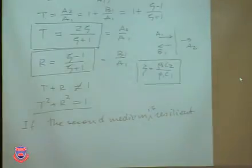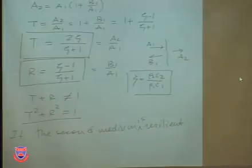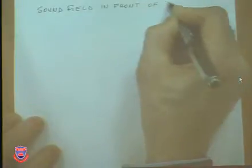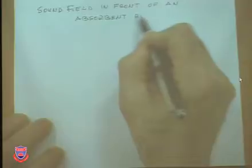Now let's look at something different. What if the boundary is neither rigid nor resilient, but it's an absorbing boundary? Some sound will be absorbed — not all will be reflected, not all will be transmitted, but some. This is getting more interesting as far as modeling is concerned. Let's call that the sound field in front of an absorbent reflector.